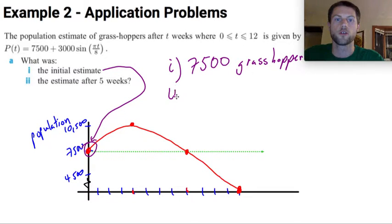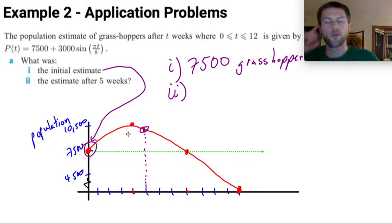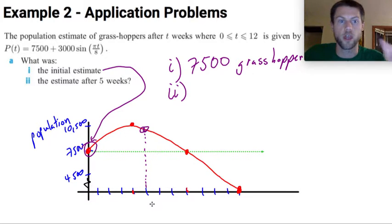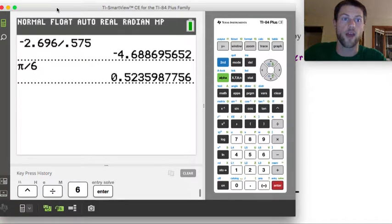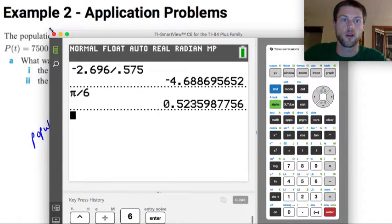All right, and then for number two, this one's a little bit trickier, the estimate after five weeks. So I can take a look at five weeks and I can make an approximation based off of this graph, but it's not super precise. So in this instance, I'm actually going to need to go to my calculator. So let's actually take a pause in using this graph. Let's go back to the calculator and graph the actual function that I'm given here.